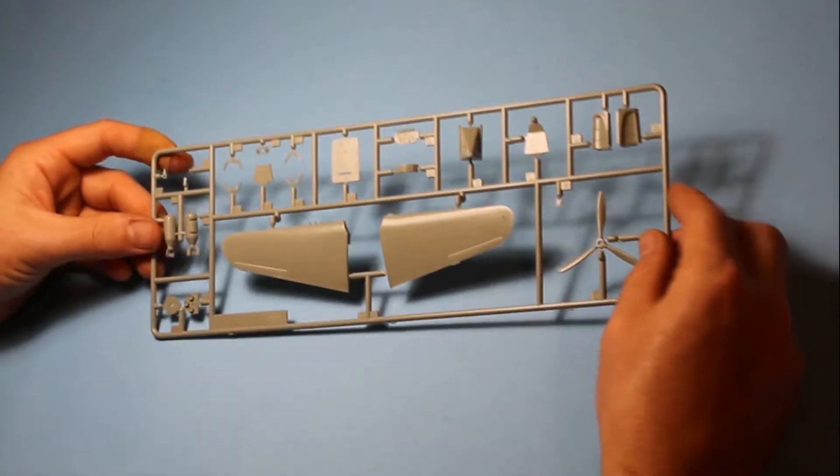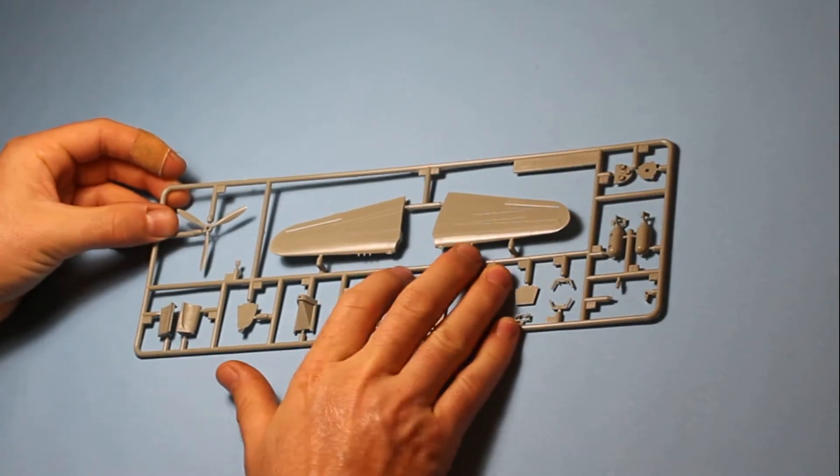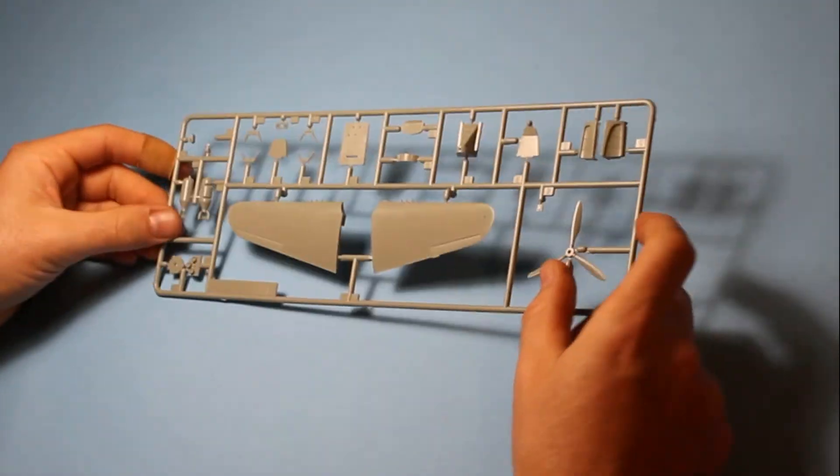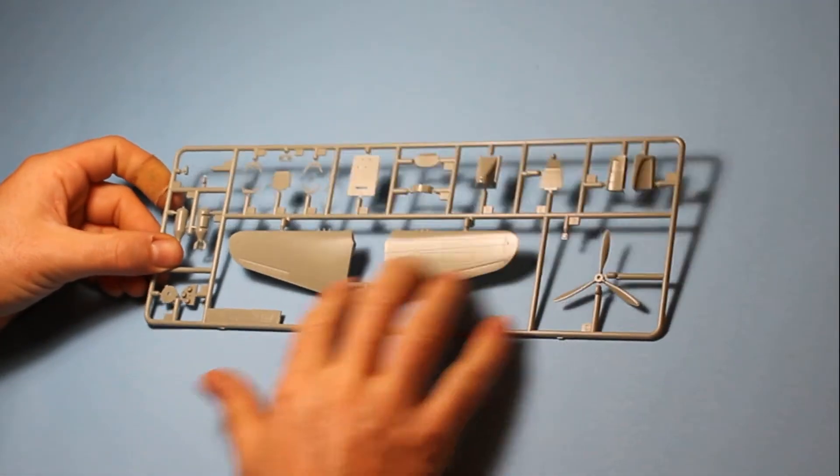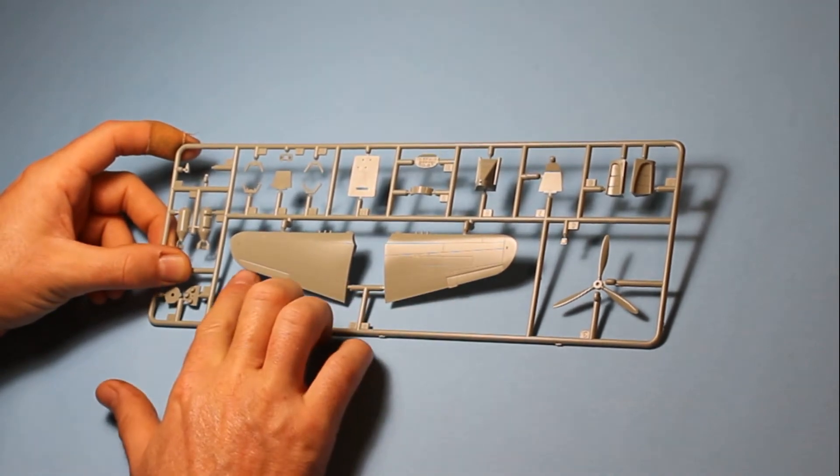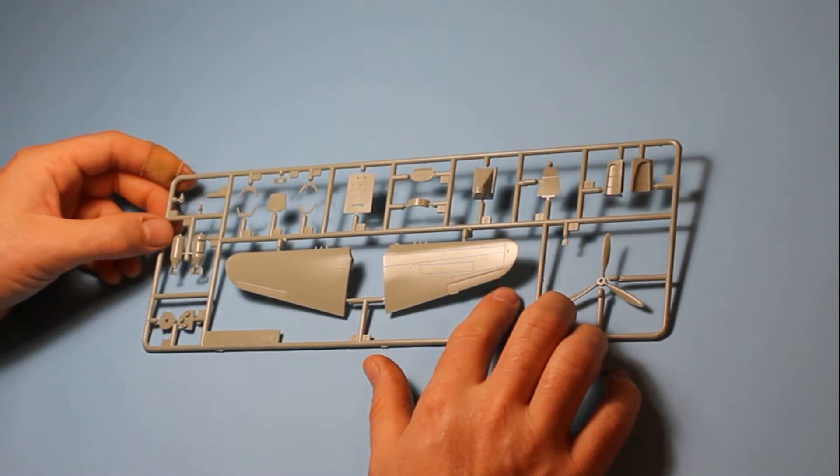And then we've got the next sprue, with the tops of the wings here, with the guns molded in. Again, very nice recessed panel lines right the way across, absolutely no problem. The detail is very good. We've got fabric detail on the ailerons here as well, which is extremely nice.